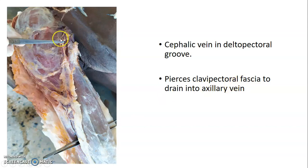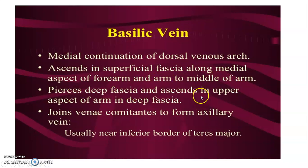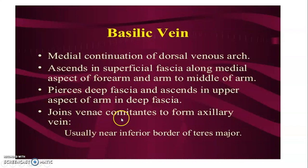The cephalic vein passes through the deltopectoral triangle, pierces the clavipectoral fascia in the deltopectoral groove, and empties into the axillary vein. The basilic vein, on the other hand, is the medial continuation of the dorsal venous arch. It ascends in the superficial fascia along the medial aspect of the forearm and arm. At the middle of the arm, it pierces the deep fascia and ascends within the deep fascia. It then joins the venae comitantes of the brachial vein, forming the axillary vein at the inferior border of teres major.